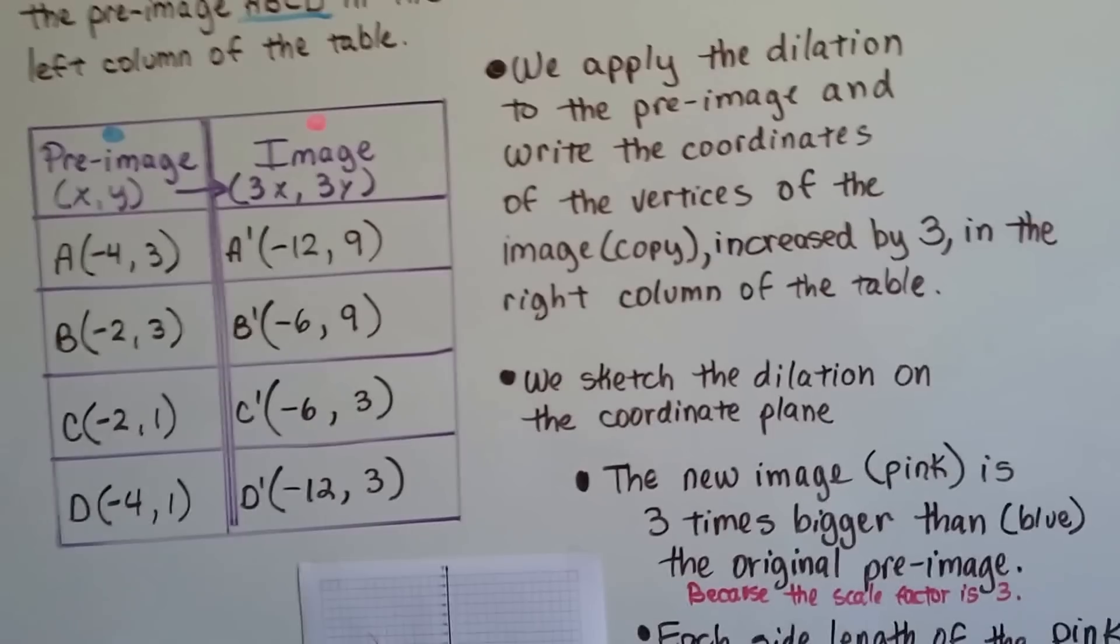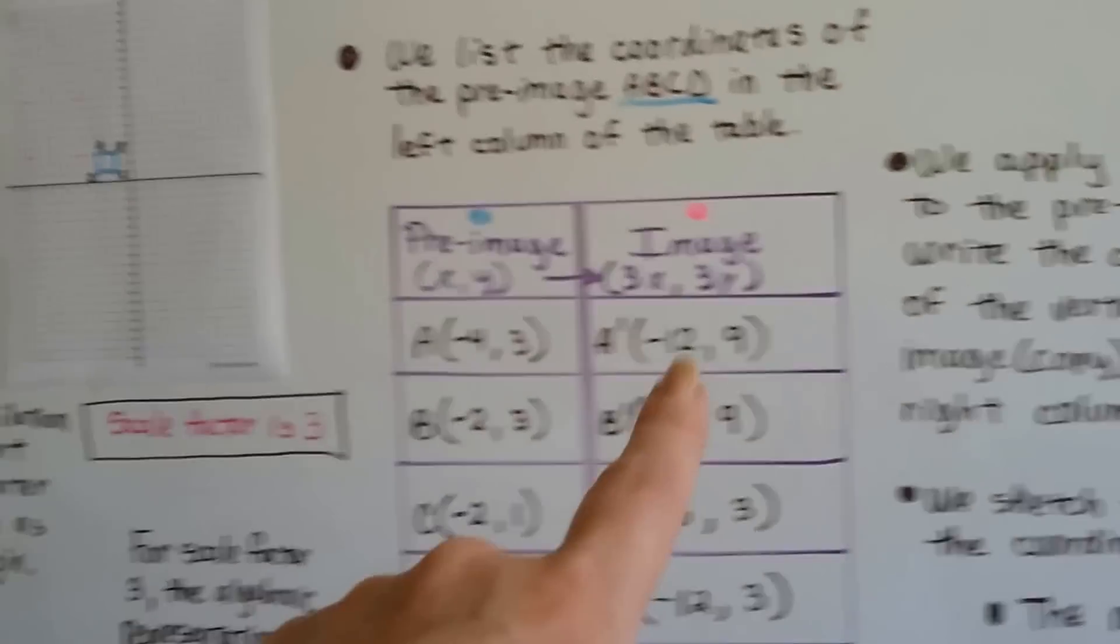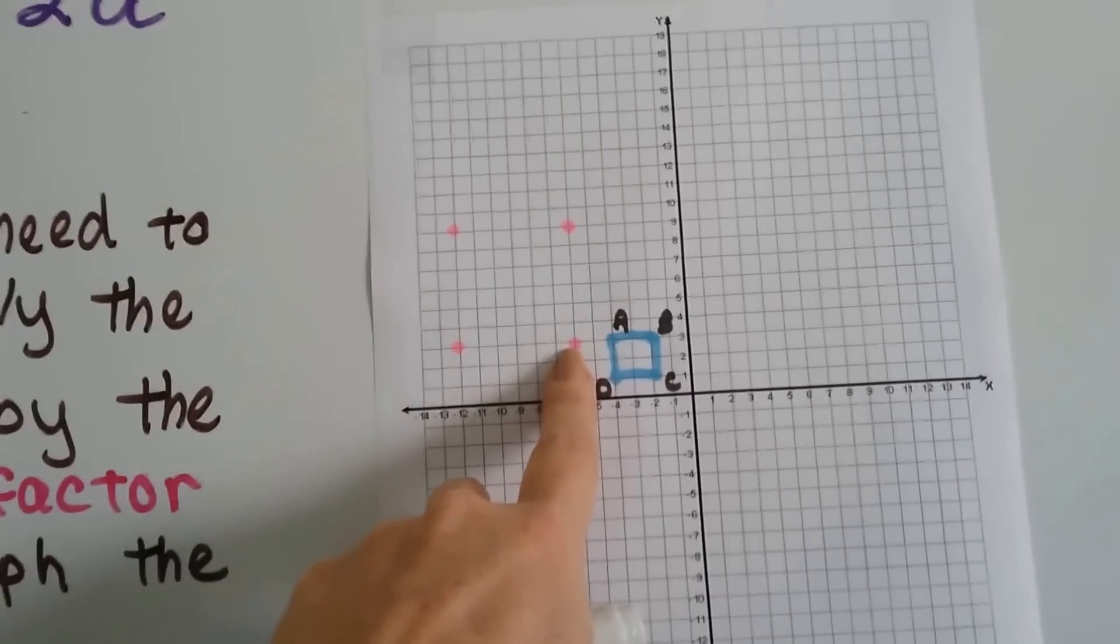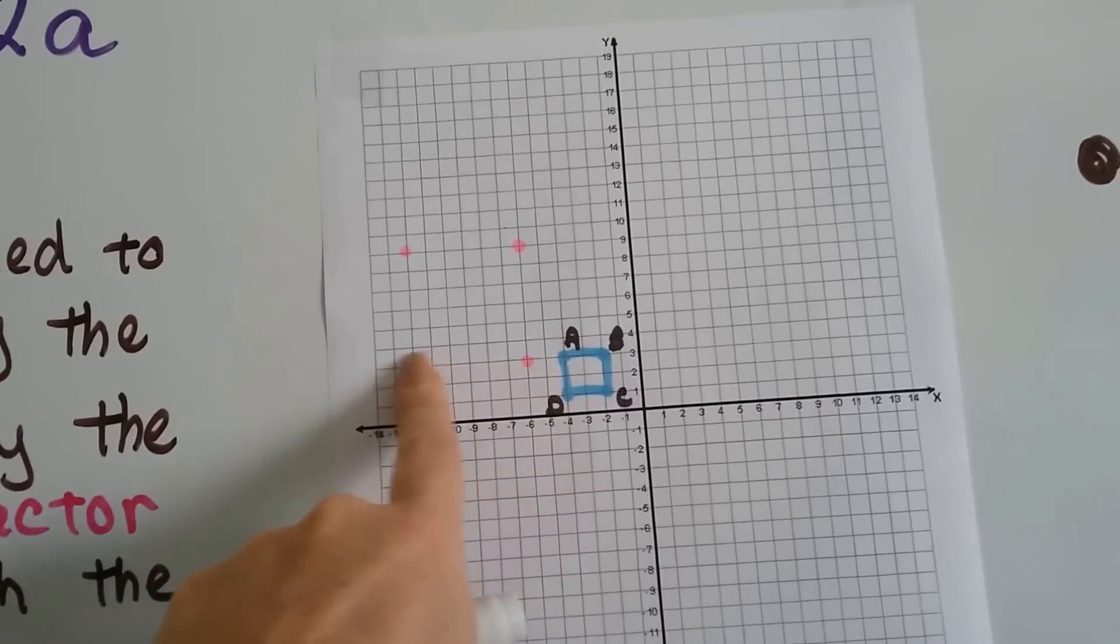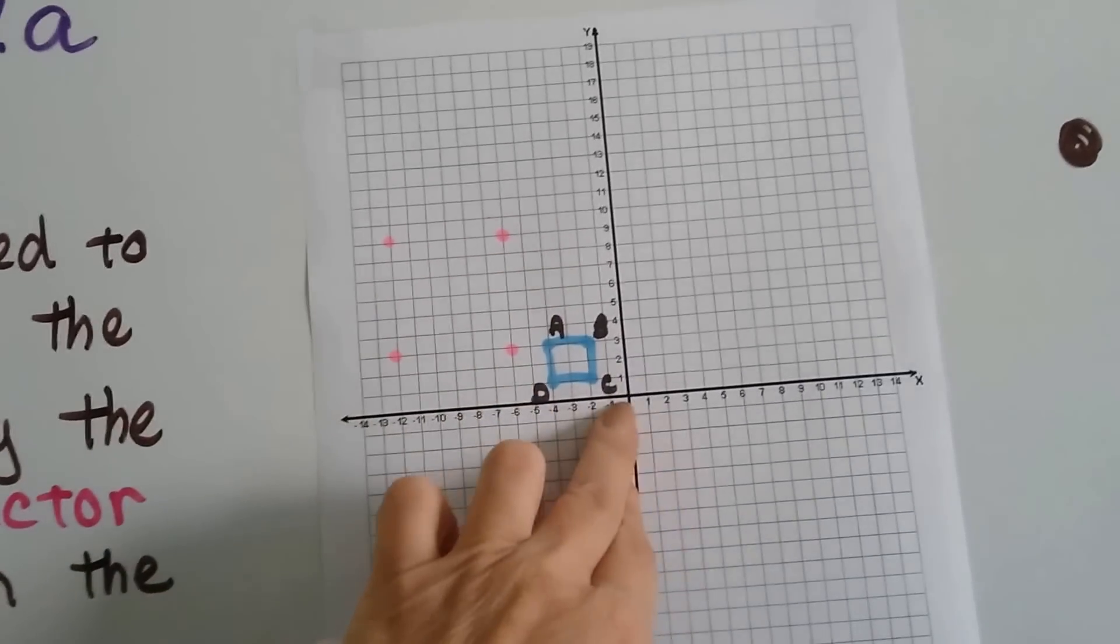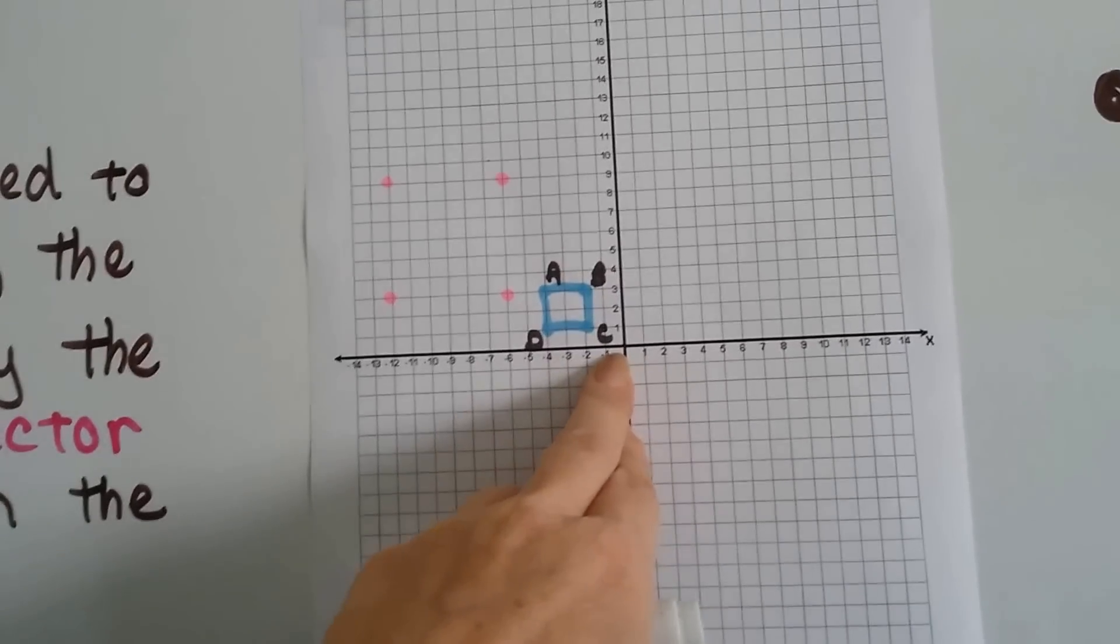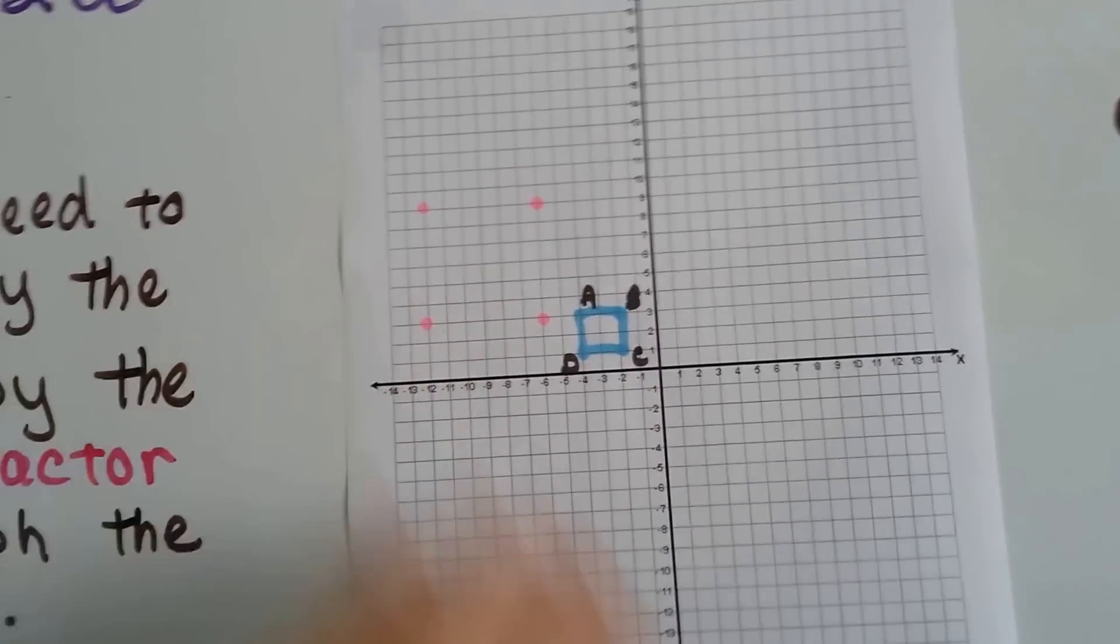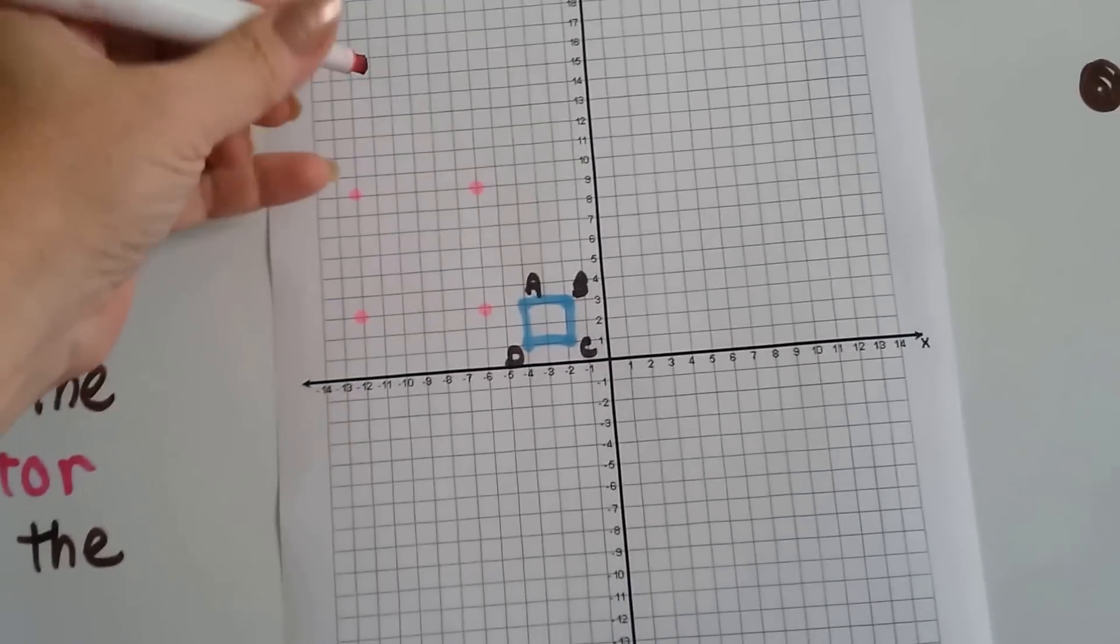Now we can sketch the dilation on the coordinate plane. So we plot the points for the copy, the image, and these pink dots are going to be the dilation. So we can see that the origin is the center of dilation, this is the pre-image, and it's going to enlarge into this one.